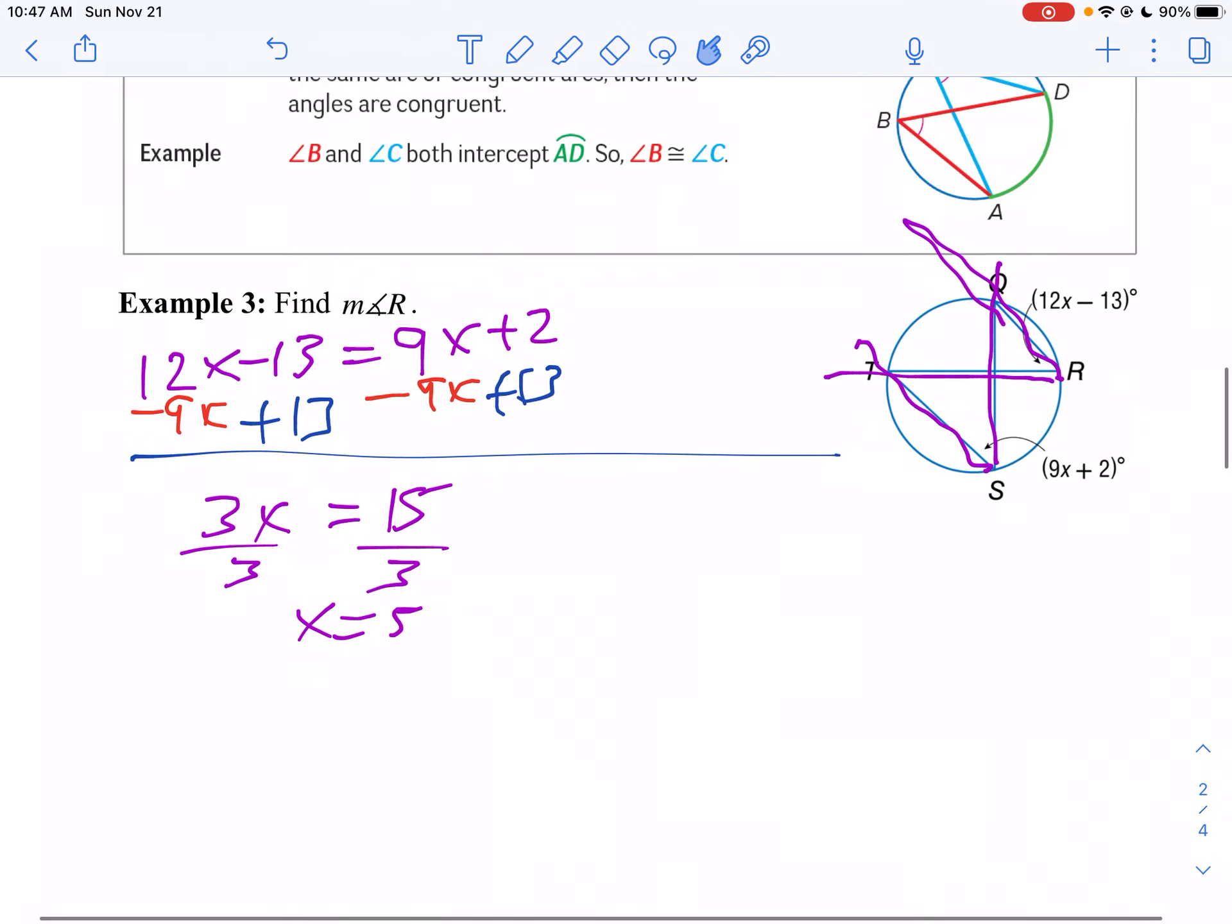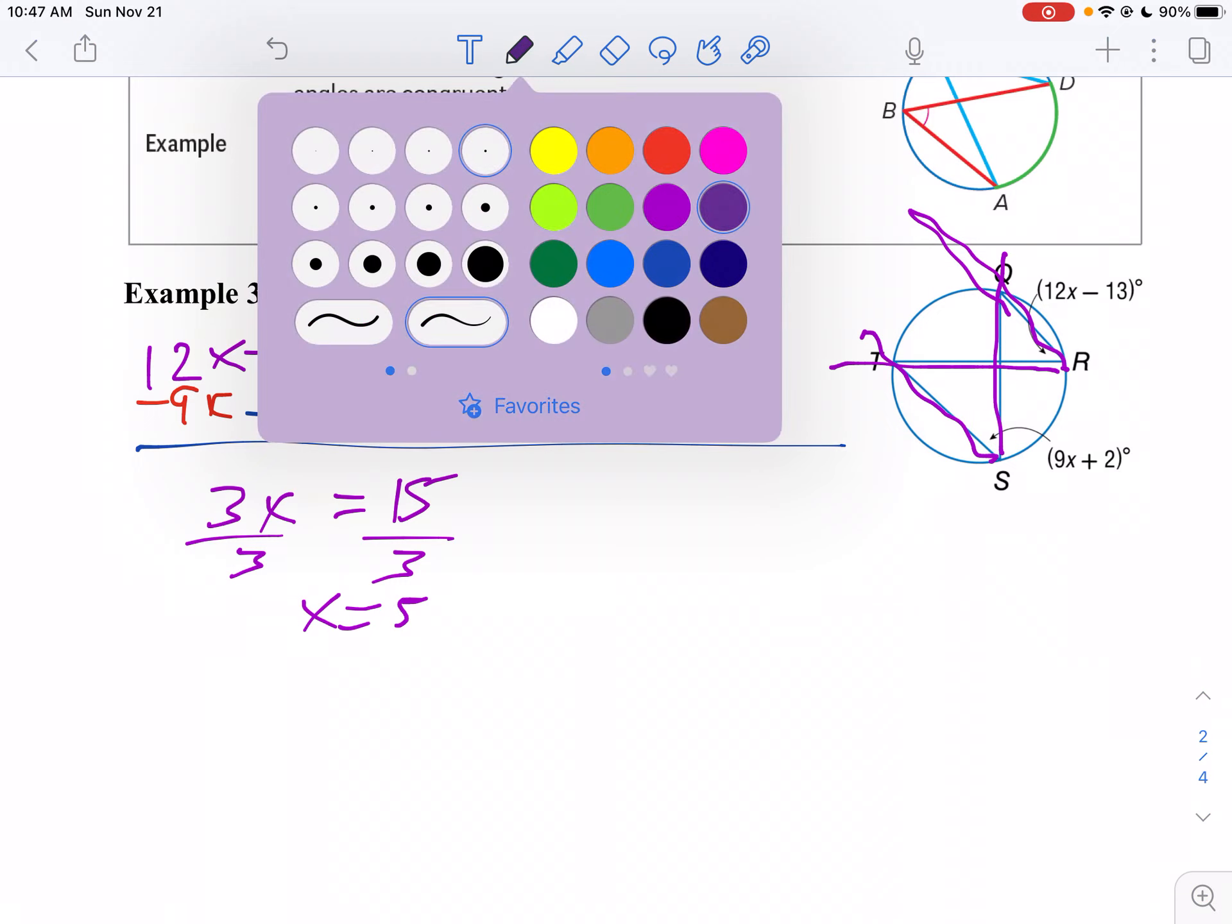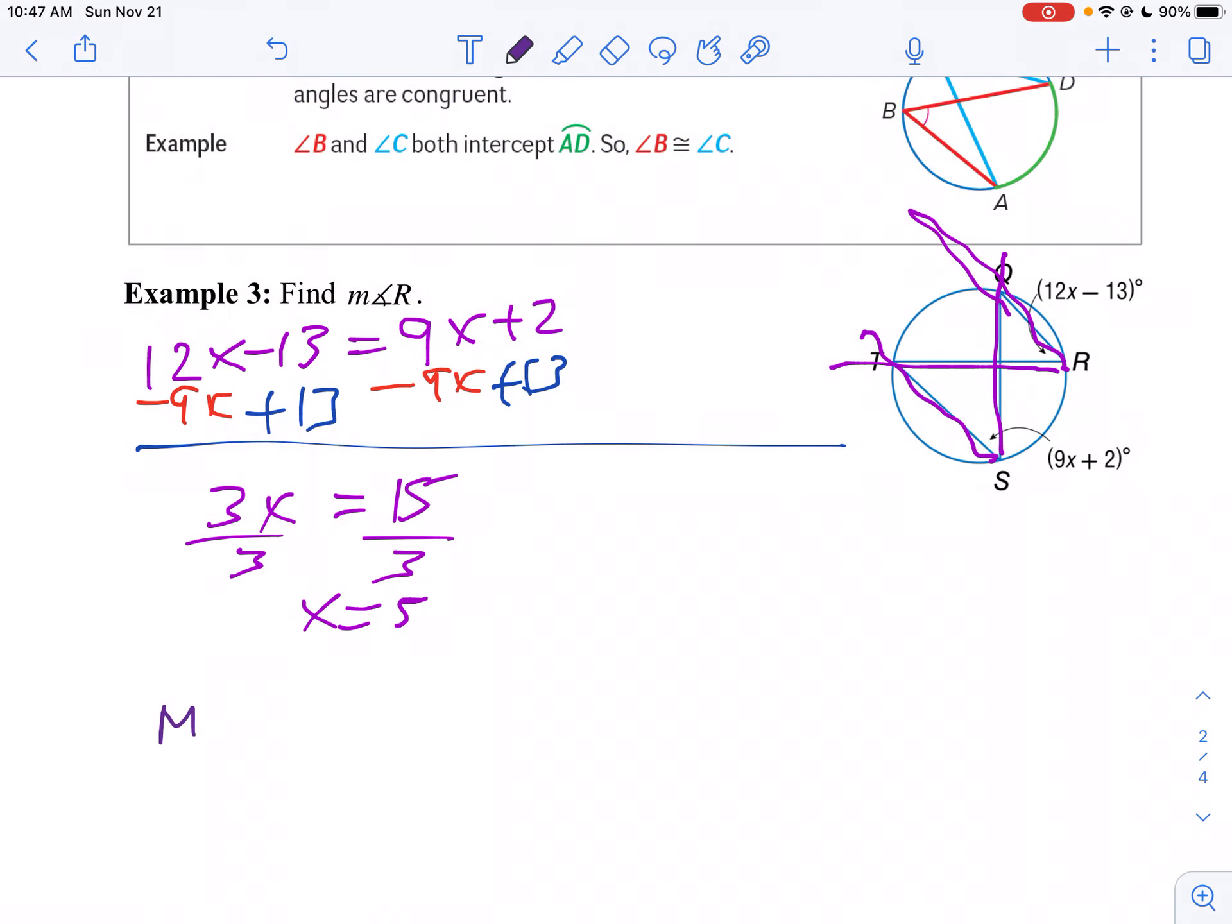Now please note, we're not done. I didn't want x. I want to find the measure of angle r. So I'm going to say the measure of angle r, which I know, is 12x minus 13. So that's 12 times 5 minus 13, which is 60 minus 13, which is 47 degrees. And there is our answer.